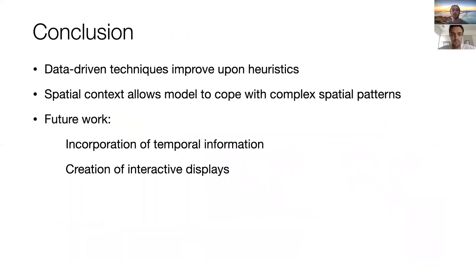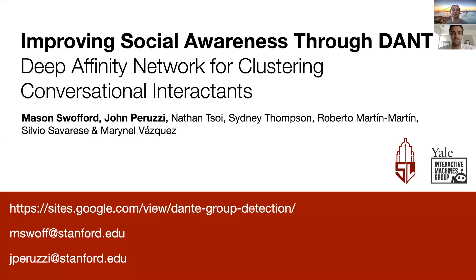In summary, we found that our data-driven methods effectively improved upon prior work. In particular, our incorporation of context information allowed our method to deal with complex spatial patterns without an ad hoc post-processing step. In the future, we would like to incorporate temporal information into the model, as this can improve accuracy. We would also like to build upon the robot setup we presented by applying this technology to the creation of interactive displays in mobile social robots. Please see our website for further results and demonstrations.